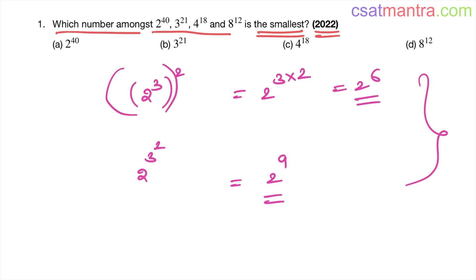Please be careful: when you write a whole power, the outer exponent applies to the entire base expression, not just part of it. For example, in 2 power 3 whole power 2, the outer 2 applies to the full expression 2 power 3, not just to 3.